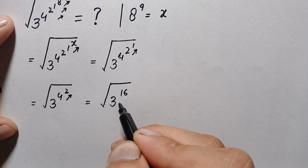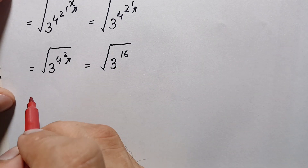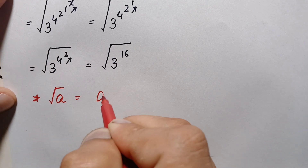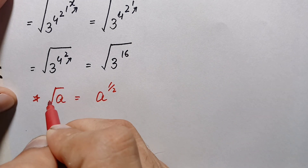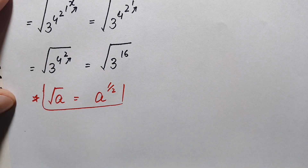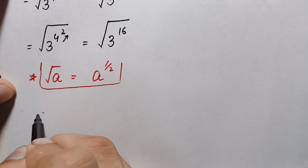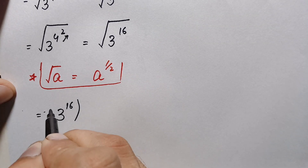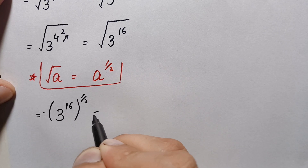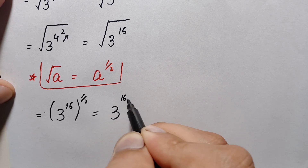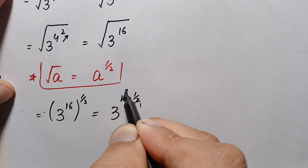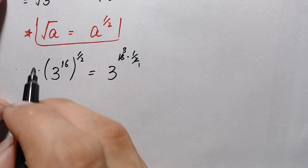Inside the square root, we use the square root property: the square root of any number a can be written as a raised to power 1/2, meaning the radical sign is equivalent to 1/2 in the exponent. So we write 3 raised to power 16, whole raised to power 1/2. Multiplying the exponents, we get 3 raised to power 16 times 1/2, which simplifies to 3 raised to power 8.